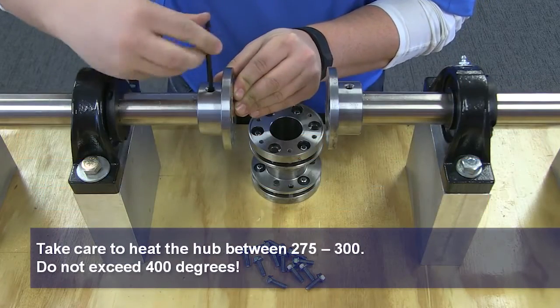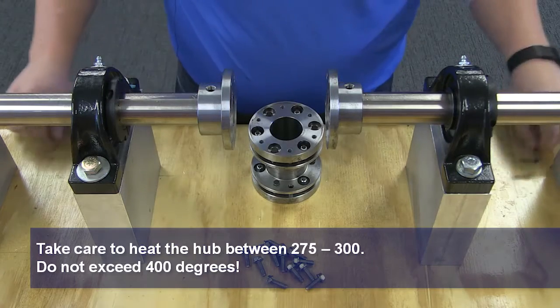If you are using interference hubs, it is preferred to use an oven to create uniform heating.